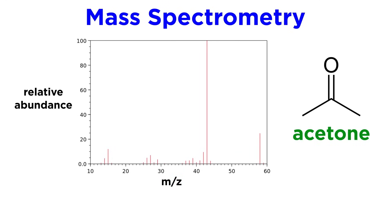For example, take a look at this mass spectrum for acetone. When acetone is broken up into fragments, there are only a few possibilities, so we should be able to assign these peaks by looking at the molecular masses.